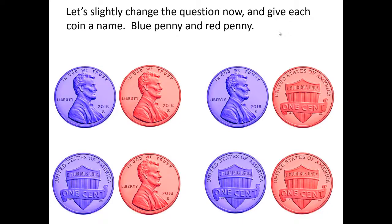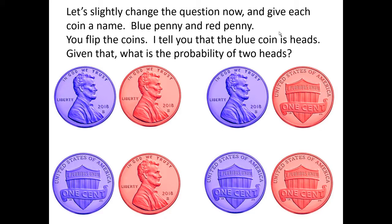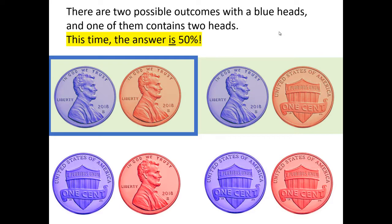Now let's ask a question that seems identical but is slightly different in a very important way. You're going to flip two coins, and we'll label each coin — we'll call them blue penny and red penny. You flip the coins, and now I tell you that the blue coin landed heads. Given that, what is the probability that both coins landed heads? With this slightly different game and labeling of the coins, the answer is 50%, because we're only looking at the possible outcomes in which the blue coin is heads — two of them — and of those two, there is one outcome in which there are two heads. This time, the answer is indeed 50%.